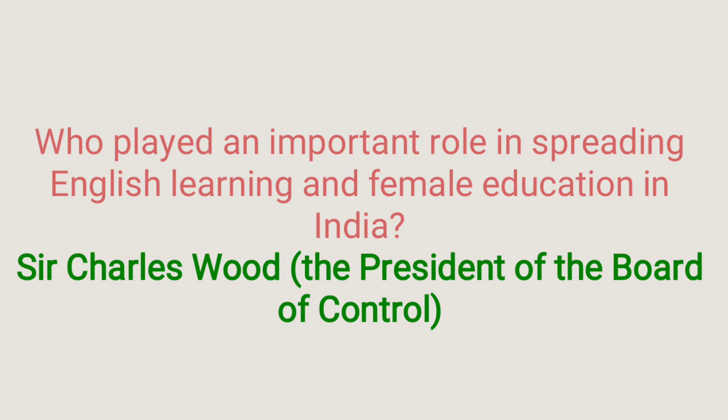Who played an important role in spreading English learning and female education in India? Answer is Sir Charles Wood, who was the president of the Board of Control. In 1854, Sir Charles Wood sent a dispatch to Lord Dalhousie, the then Governor General of India. Wood suggested that primary schools must adopt vernacular languages, high schools must adopt Anglo-vernacular languages, and at college level English should be the medium of education.